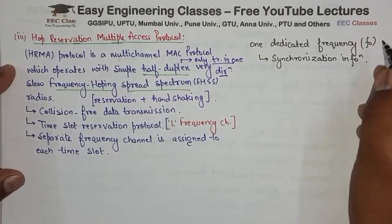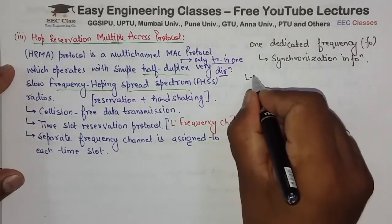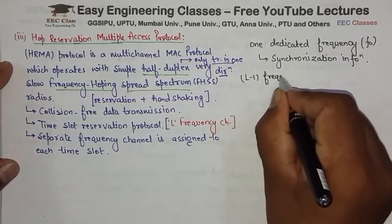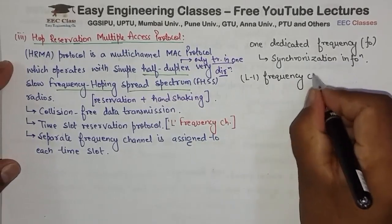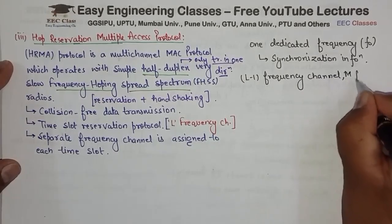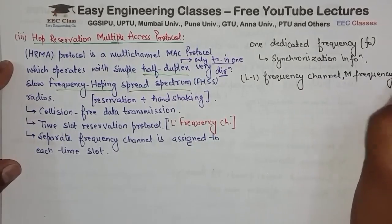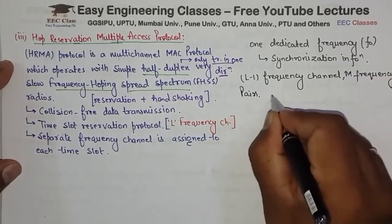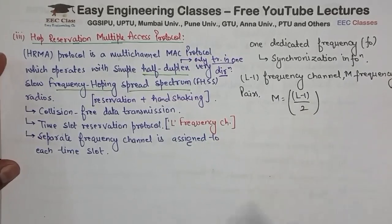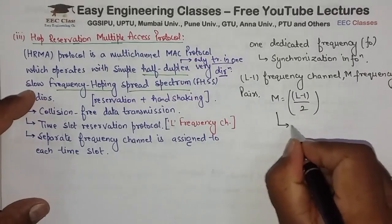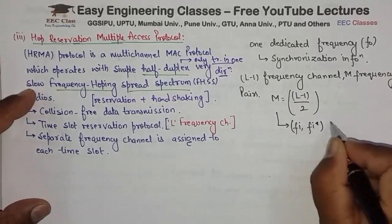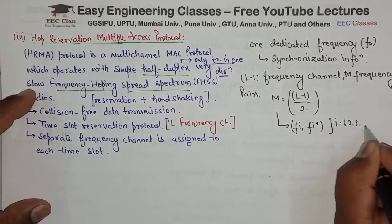The remaining L minus 1 frequency channels are divided into M frequency pairs, where M equals (L minus 1) divided by 2. Each frequency pair is denoted as Fi and Fi-star, where i goes from 1, 2, 3 up to M.